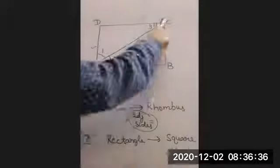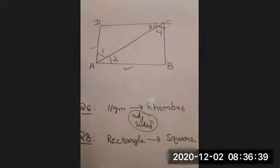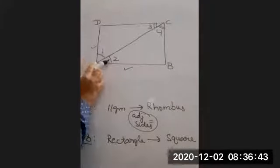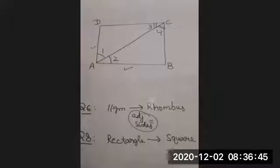Triangle ABC and triangle ADC. Very good. Now in these two triangles, angle 1 is equal to angle 2, given. Angle 3 is equal to angle 4, given.